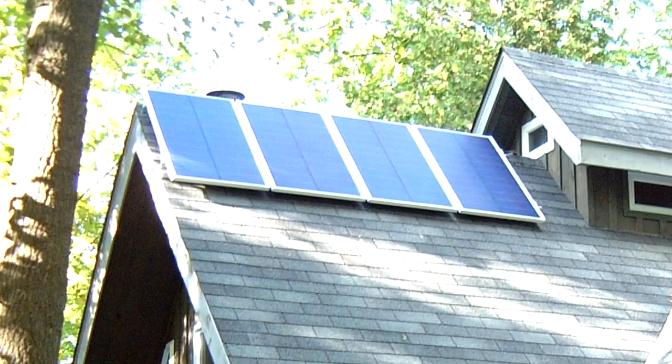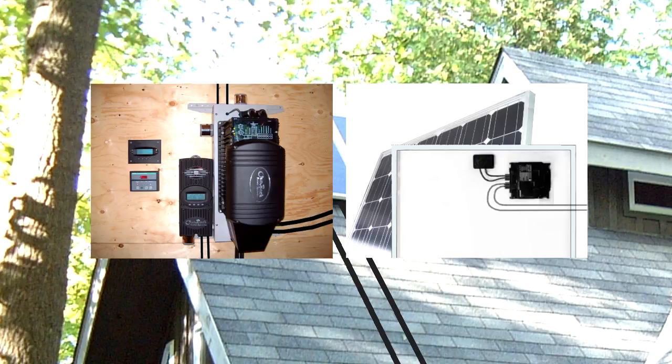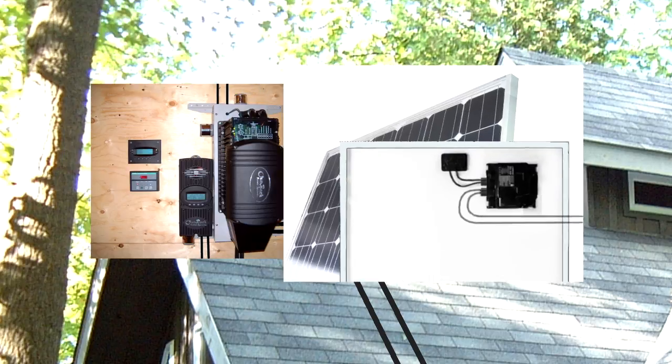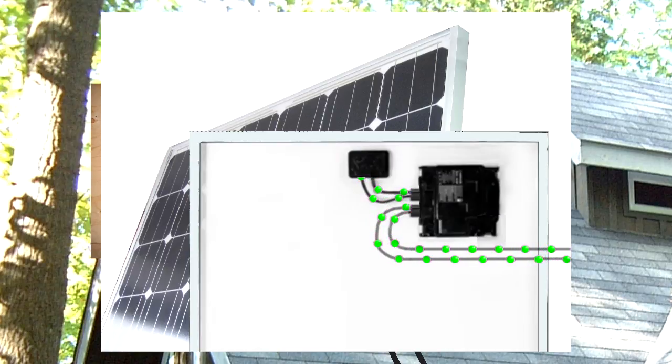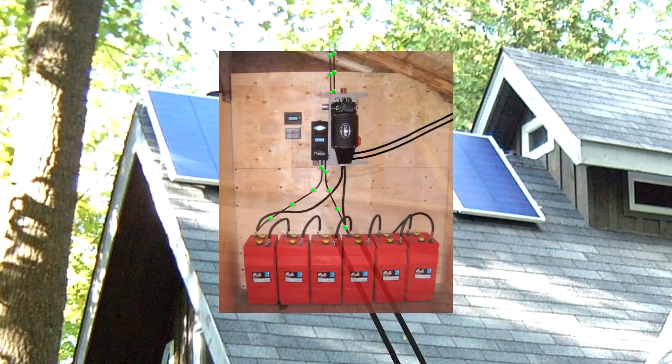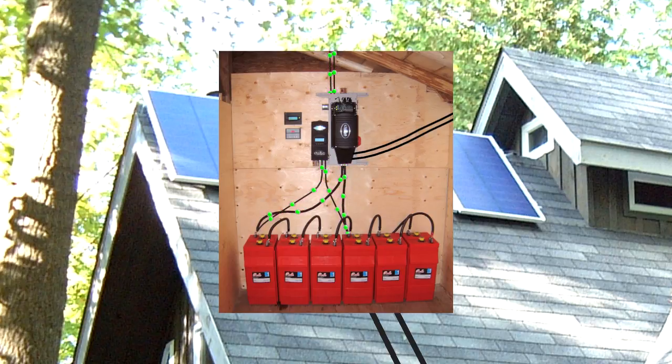In a solar power system, the solar panels produce DC electricity. At some point in the system, that DC is converted to AC electricity using something called an inverter. The inverter can do that directly from the solar panels, or the solar panels can charge batteries, and the inverter can then take DC from the batteries and convert it to AC.